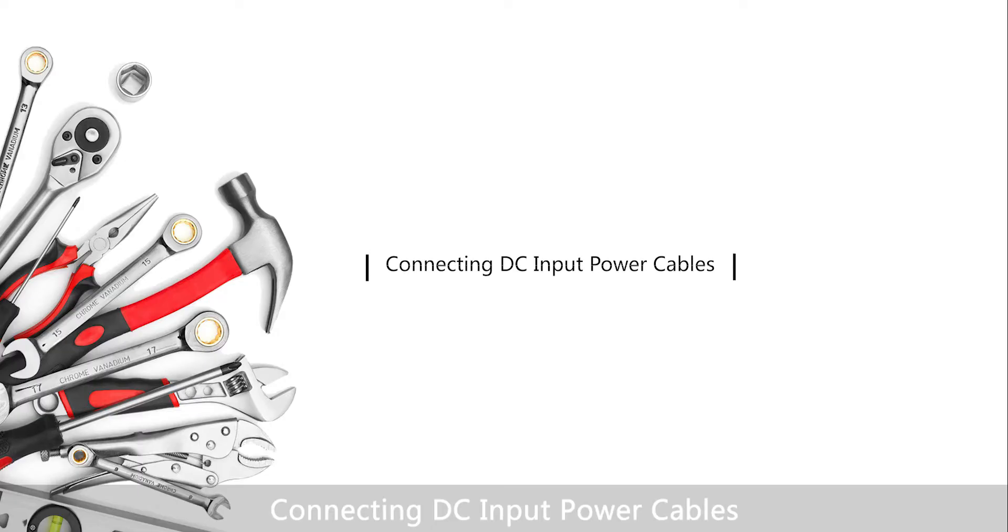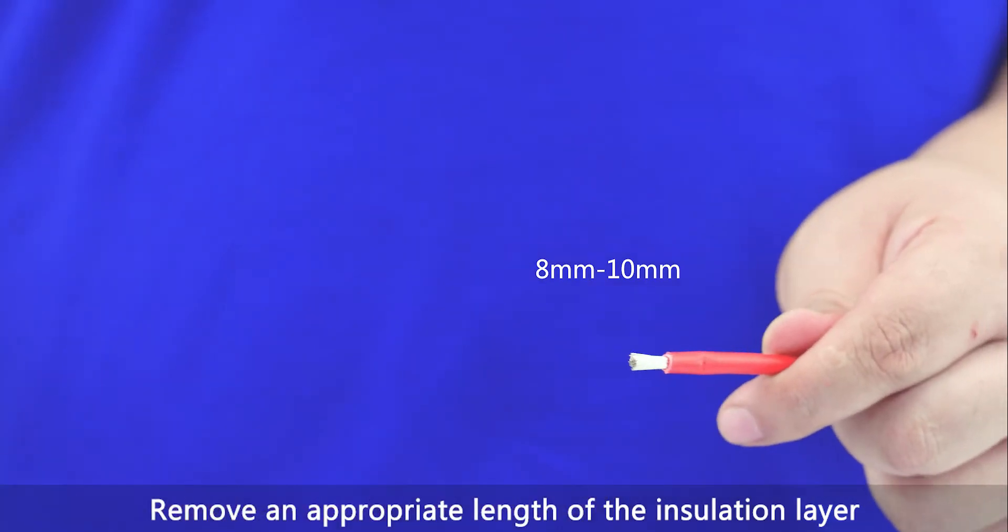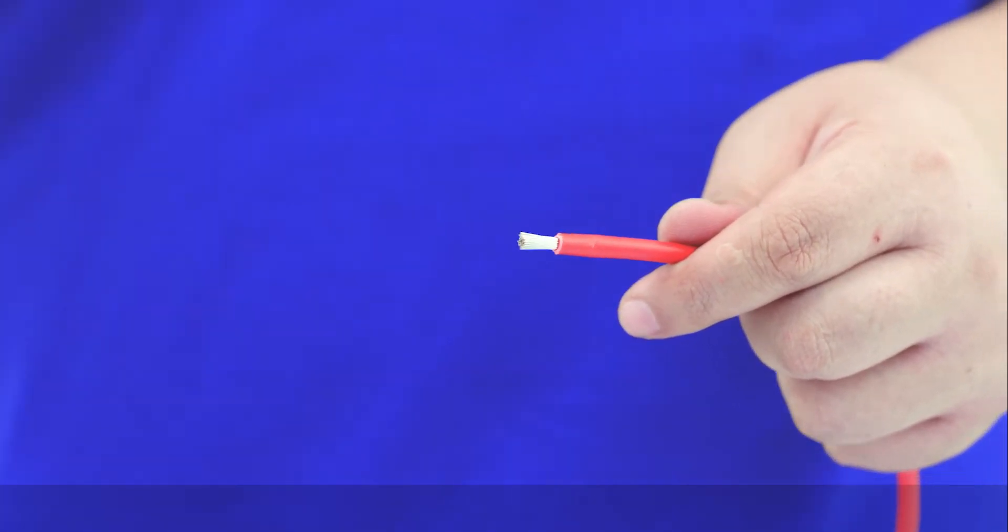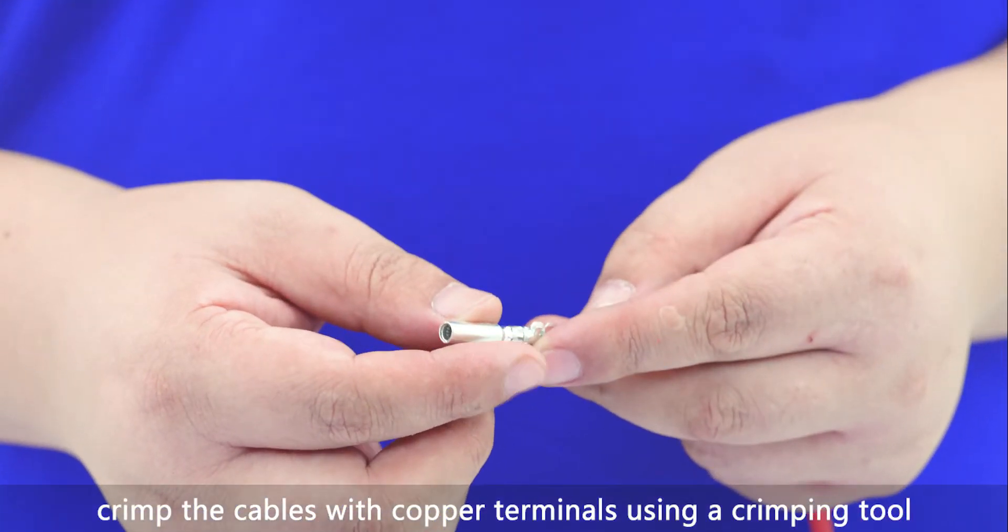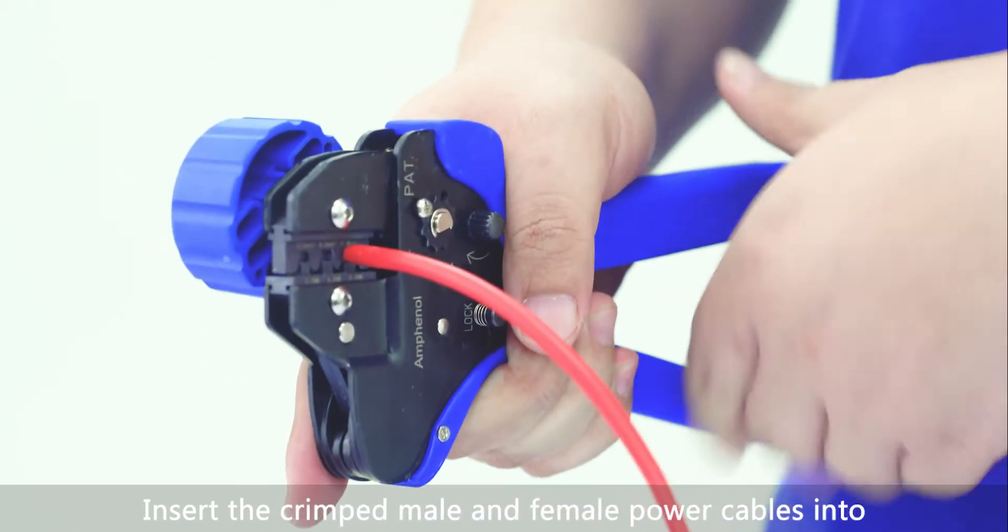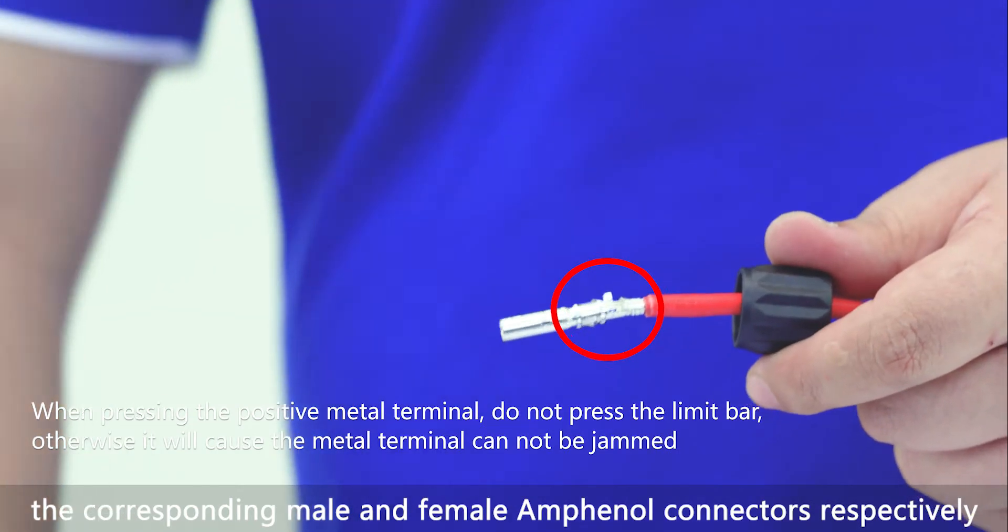Connecting DC input power cables. Remove an appropriate length of the insulation layer from DC input power cables using a wire stripper. Crimp the cables with copper terminals using a crimping tool. Insert the crimped male and female power cables into the corresponding male and female Amphenol connectors respectively.